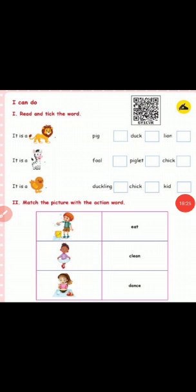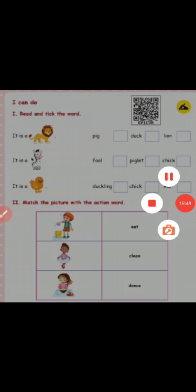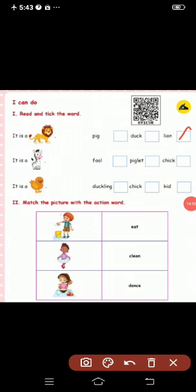Children, take book page number 131. Read and tick the word. First one — it is a lion. Tick the third box — lion. See the second one — it is a foal. Foal is the correct answer; put in the first box. See the third one — it is a duckling. The young one of a duck — chick is the correct answer for the hen. Tick the second box.